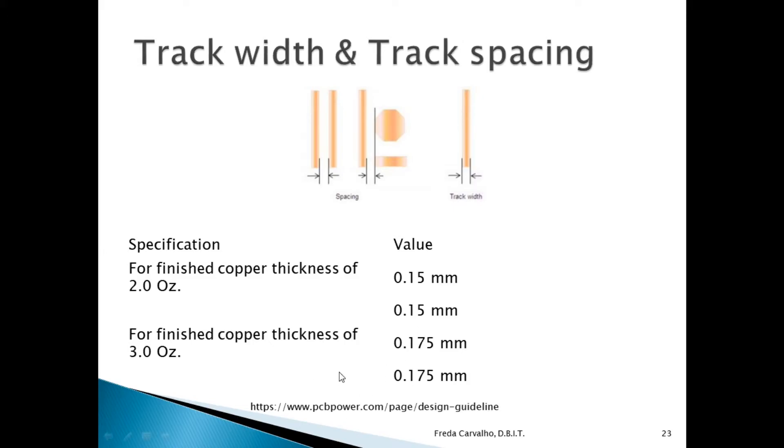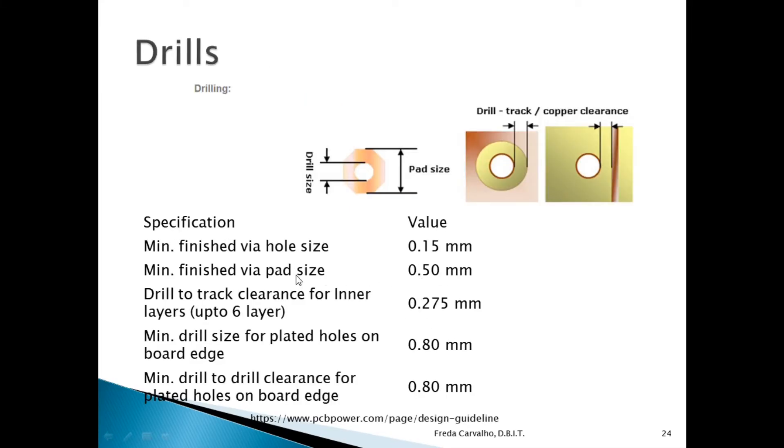If it's a 3 oz copper, the minimum would be 0.175 mm, below which they cannot do it for you. Similarly, 0.15 mm minimum via hole size. You have to make a note of these things while you are setting up your board in KiCad.